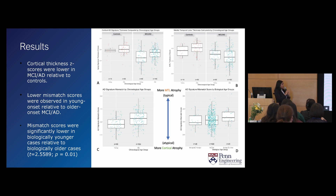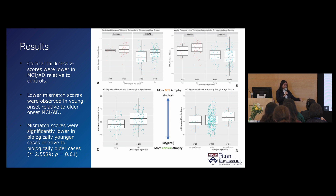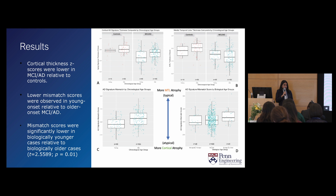We see that cortical thickness is lower in mild cognitive impairment or Alzheimer's subjects relative to controls, which is expected. We also observe a lower mismatch score in younger onset subjects relative to older onset cases. More importantly, the mismatch score is significantly lower in biologically younger cases relative to biologically older cases. This means we see greater cortical atrophy relative to medial temporal lobe atrophy in biologically younger subjects, which aligns with what we expect in atypical disease — suggesting that biological deceleration may be associated with atypical presentation of Alzheimer's disease.